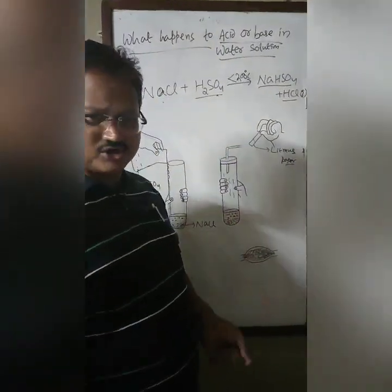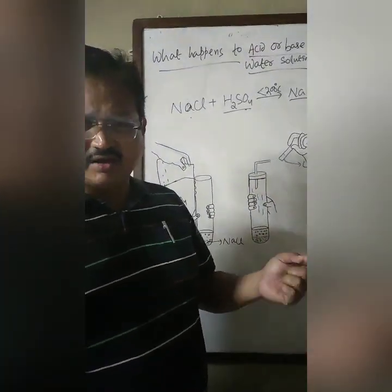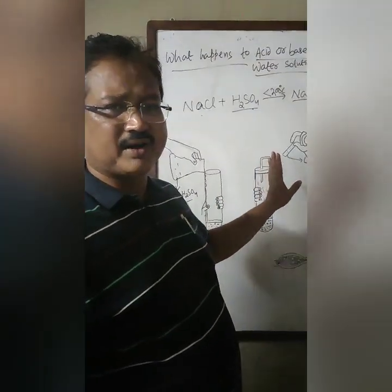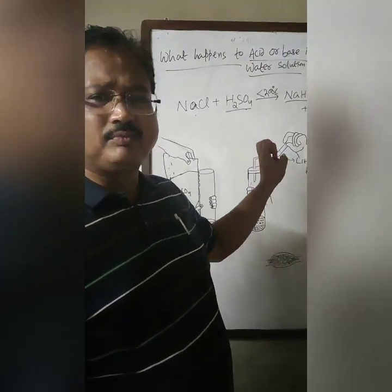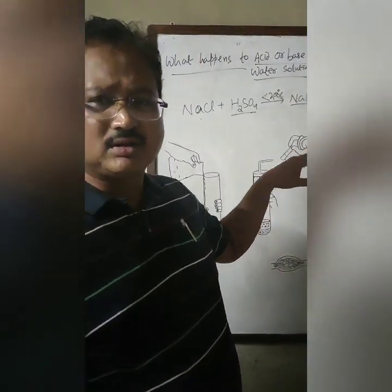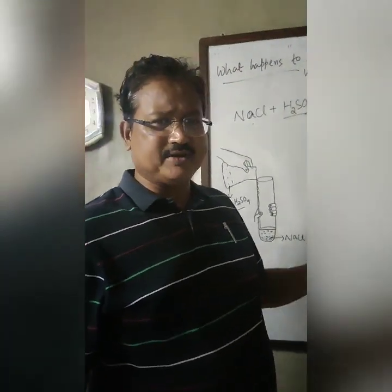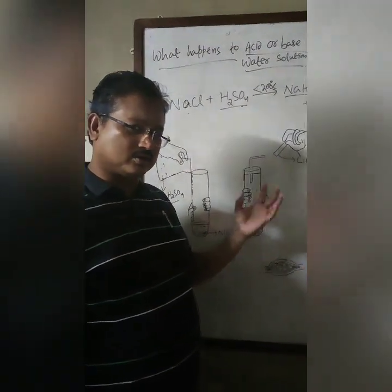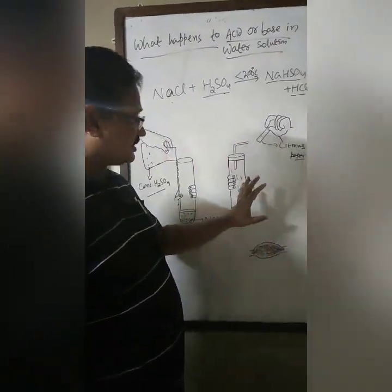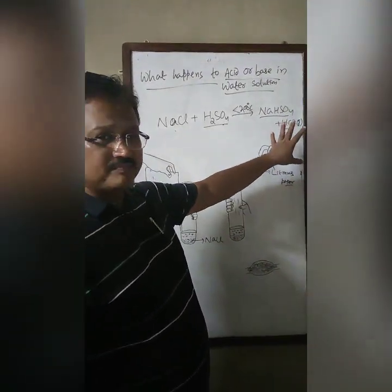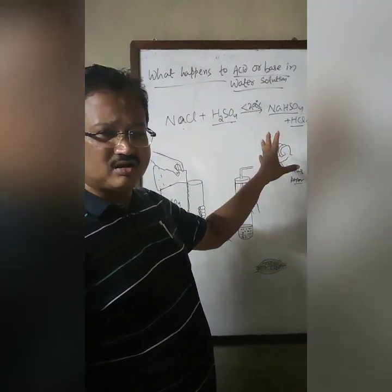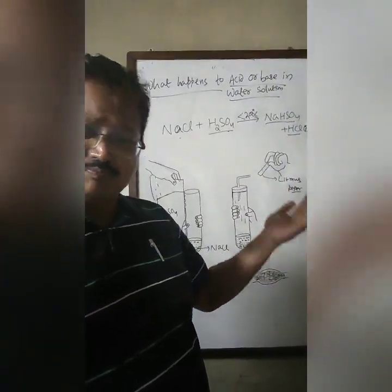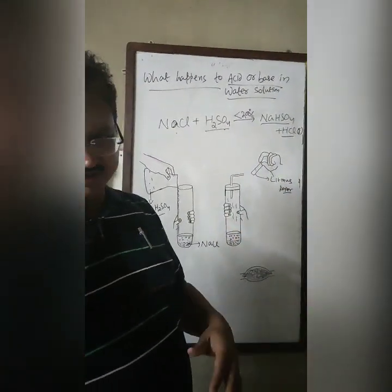But if you slightly moisten this litmus paper and show it near the fumes, you will find that the blue litmus turns red. That means the vapor is showing acidic character only in the presence of moisture.